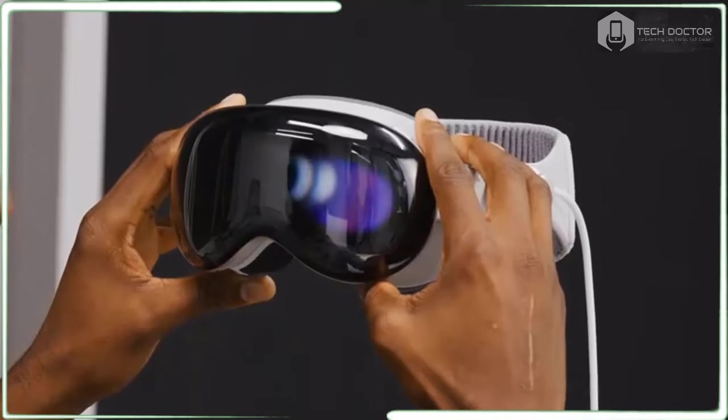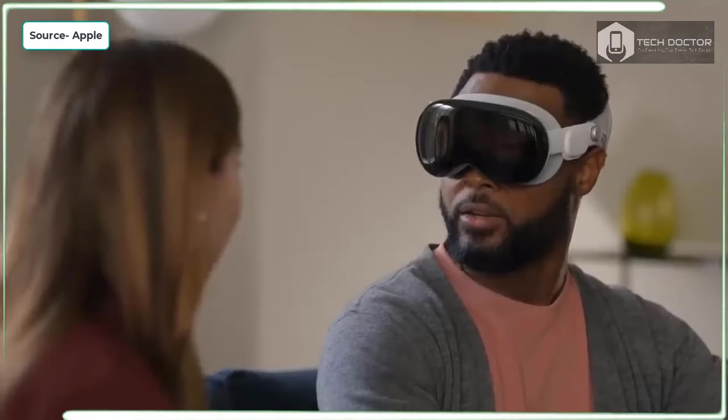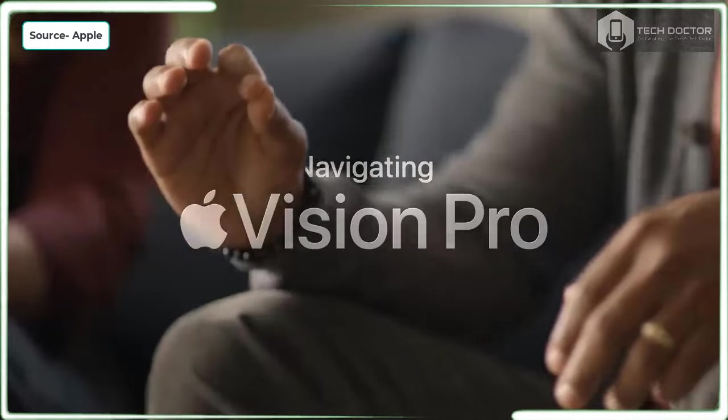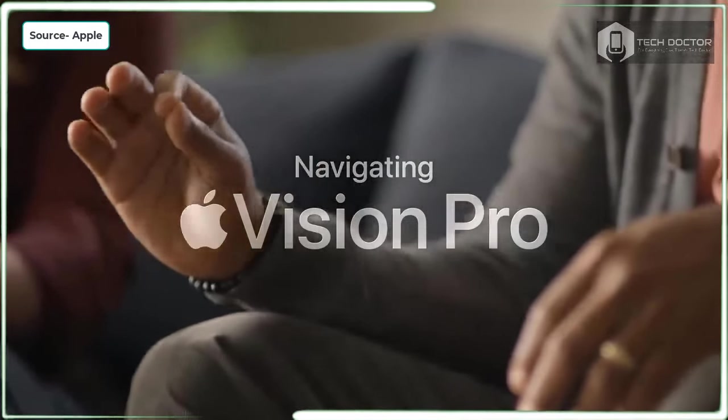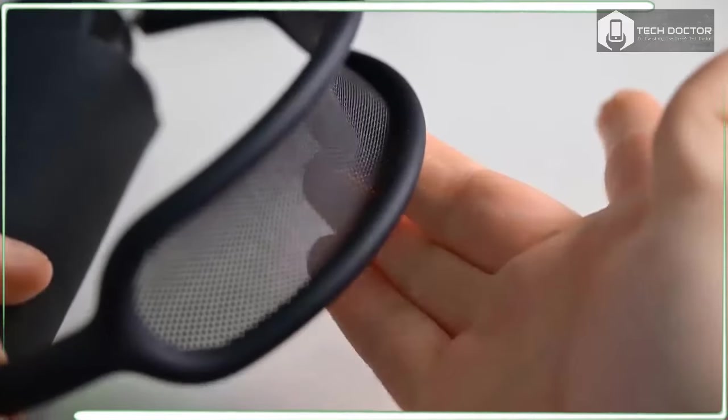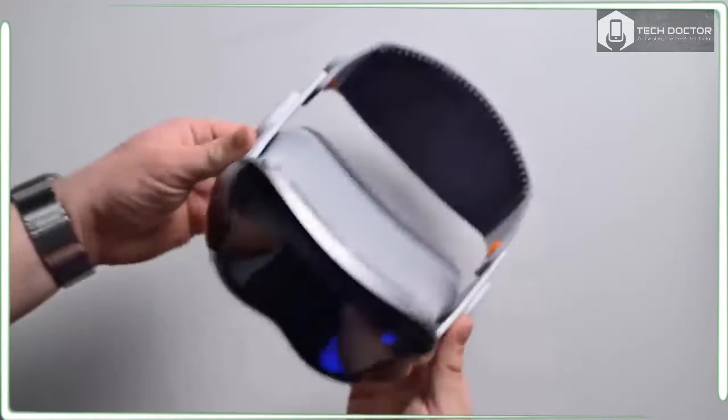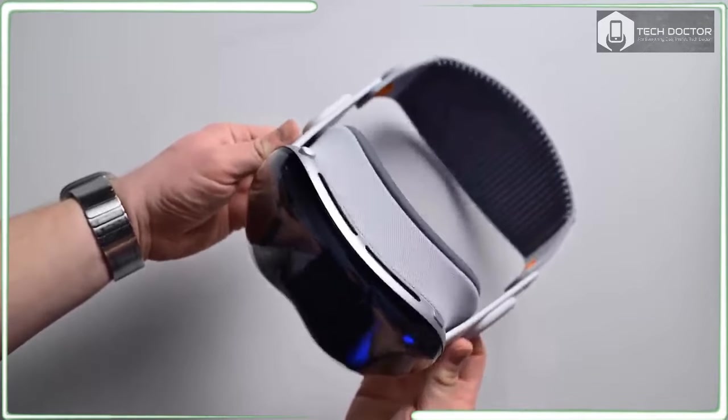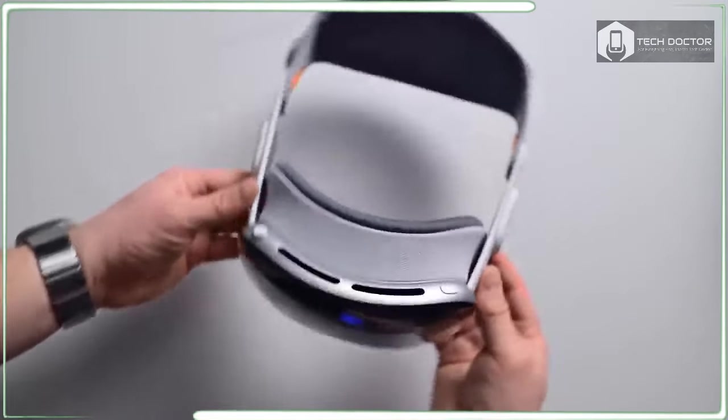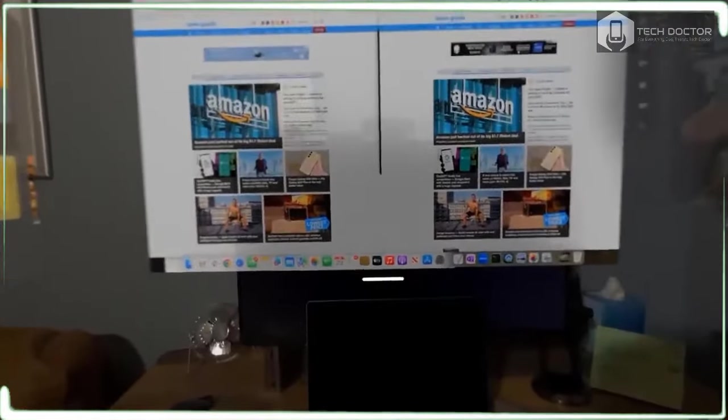The entry-level model comes with 256GB of storage, $3,699 for 512GB, and $3,899 for 1TB. Zeiss optical inserts for readers cost $99 and prescription lenses cost $149. I do like how easily they magnetically attach to the Vision Pro.